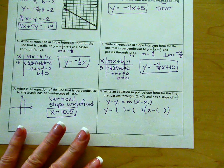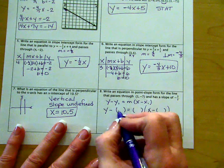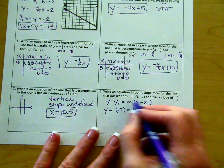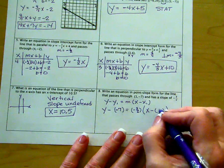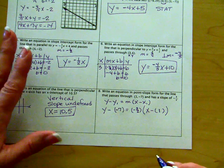Now substitute values. Y-sub-1 is negative seven. Slope is negative three-halves. X-sub-1 is positive one. Now simplify.